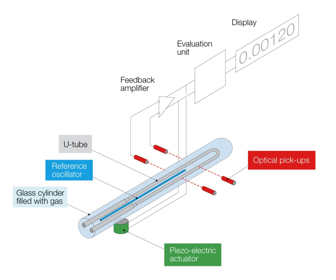The oscillating U-tube is a technique to determine the density of liquids and gases based on an electronic measurement of the frequency of oscillation, from which the density value is calculated. This measuring principle is based on the mass-spring model.